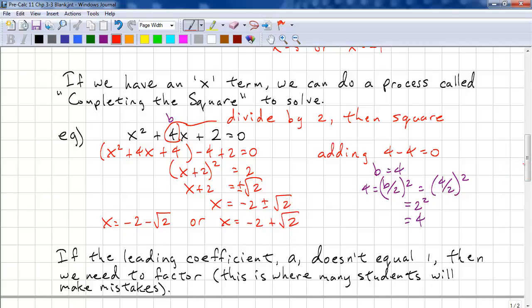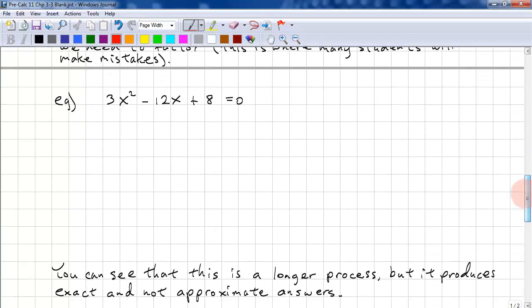And if the leading coefficient, a, doesn't equal 1, then we need to factor. And this is where students will make a mistake. So let's factor 3x squared. We factor out a 3, so that's negative 4x. Leave a space.